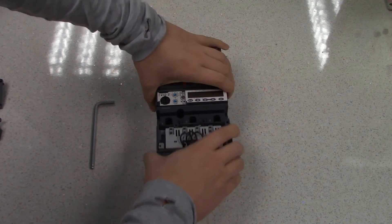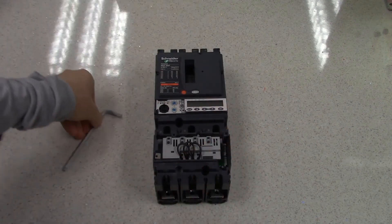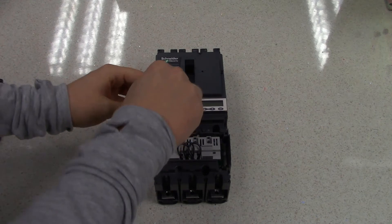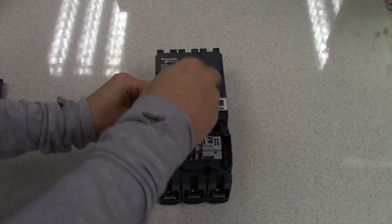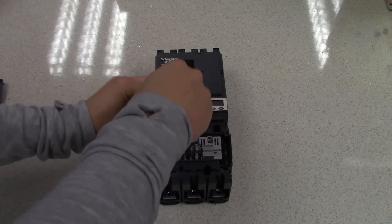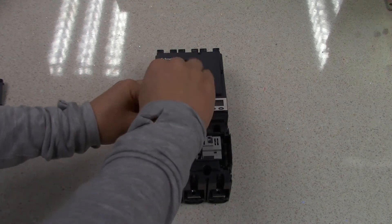Now we simply slot the two devices together and tighten up the allen keys. To do this, you will need a 5mm allen key. As this is a 160 amp device, it needs to be tightened up to 15 Nm.